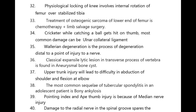Wallerian degeneration is a process of degeneration distal to the point of injury to the nerve. Classical expansile lytic lesion in the transverse process of a vertebra is found in aneurysmal bone cyst. Upper trunk injury will lead to difficulty in abduction of shoulder and flexion at the elbow. The most common sequelae of tubercular spondylitis in an adolescent patient is bony ankylosis. Pointing index and ape thumb deformity is due to median nerve injury.